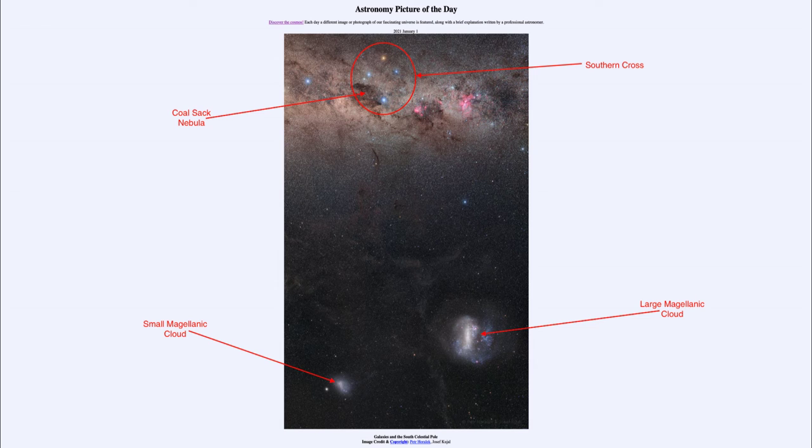Polaris is one of the brighter stars in the sky, about the 50th brightest, but still relatively bright and easy to see, and it identifies the north pole because it's relatively close to it. There is a south celestial pole star known as Sigma Octantis, and it is located towards the central portion of the image.